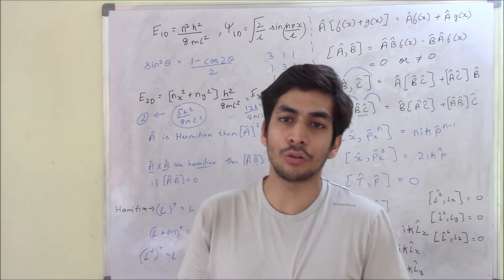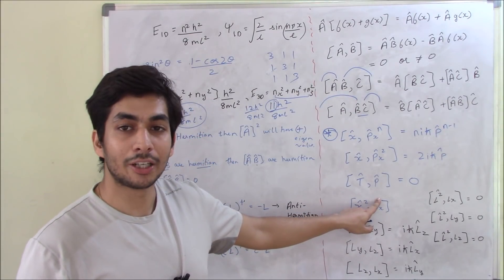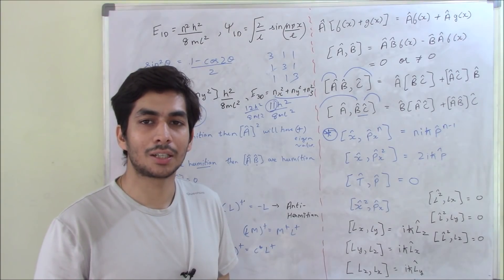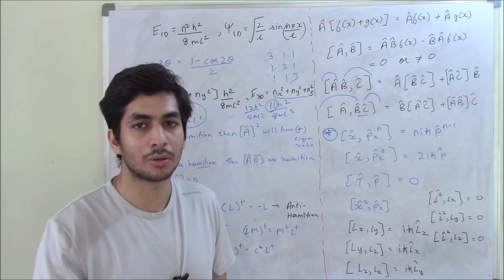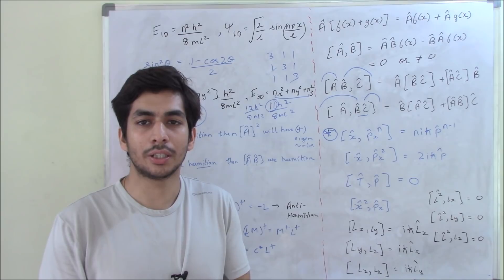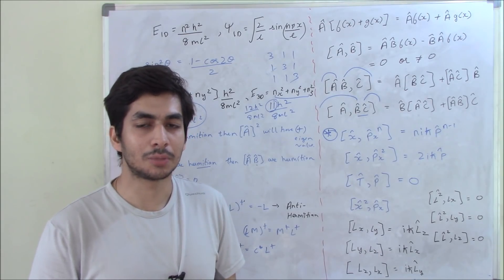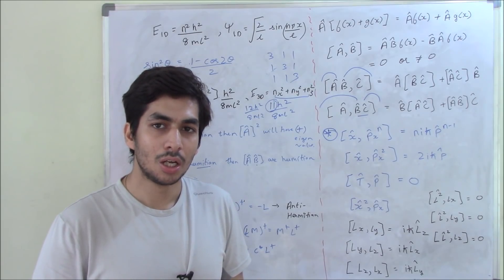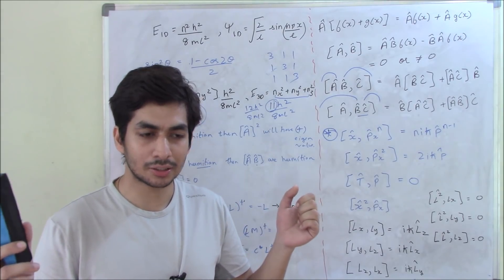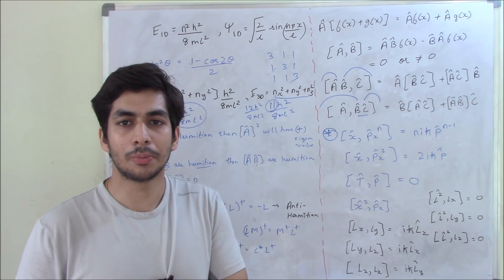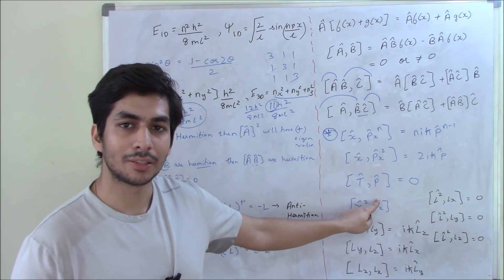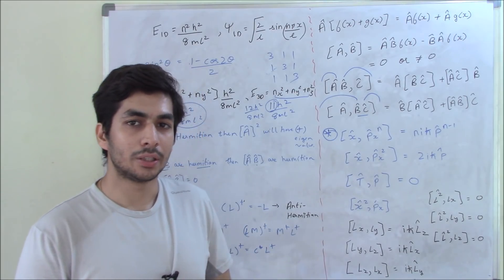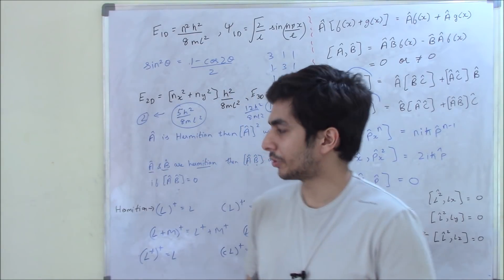For example: kinetic energy is Hermitian (it's a physically observable quantity giving a real value), and momentum is also Hermitian. Since the commutator of kinetic energy and momentum is zero, the product of the kinetic energy operator and momentum operator is also a Hermitian operator.